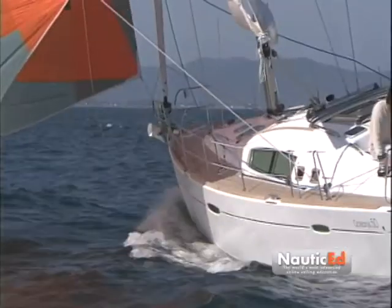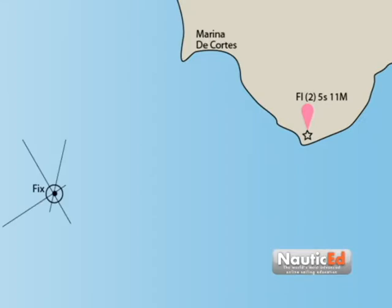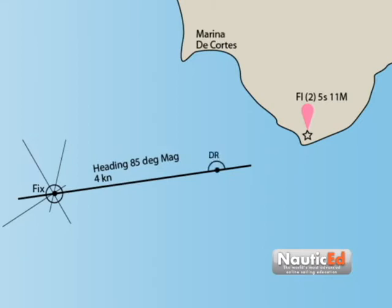We are sailing along and obtain a fix. Our heading is 085 magnetic and speed is 4 knots. At 2 and a half hours later we figure our dead reckoned position. At that time we also obtain another fix.